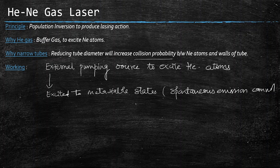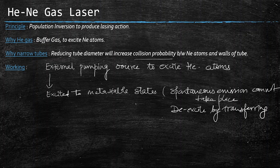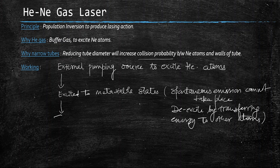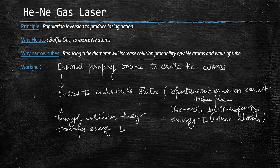Because spontaneous emission cannot occur, the helium atoms in metastable states can de-excite by transferring their energy to other atoms in the medium. Through collisions, they transfer this energy to the neon atoms. This is the role of the buffer gas — helium facilitates energy transfer to neon.